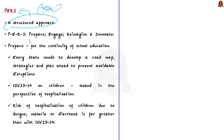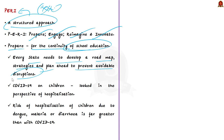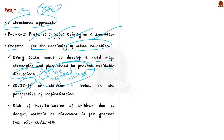To address these issues, the article discusses the PERI approach: Prepare, Engage, Reimagine, and Innovate. Firstly, 'Prepare' means preparation for the continuity of school education. Every state needs to develop a roadmap, strategies, and a plan to prevent avoidable disruptions. Objective criteria for school closure need to be developed and implemented in a decentralized manner at the block or district level.